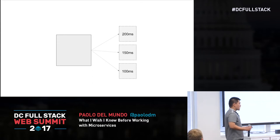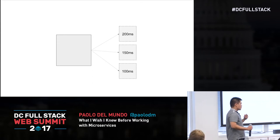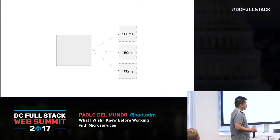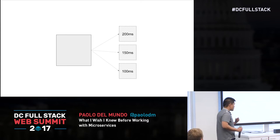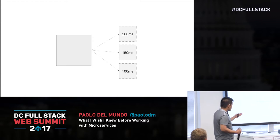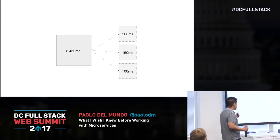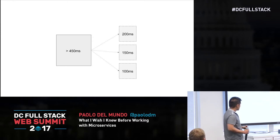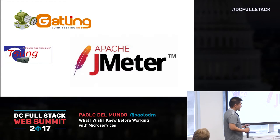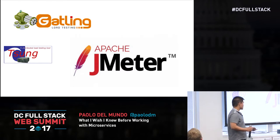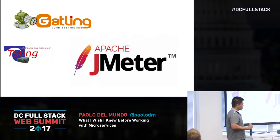So it's very important that every service publishes their numbers. For example, if I have three services and they all publish their numbers, I know that the time it would take to service a request would at least be that much. It's really important to use load testing tools — any one of these will do — but it's super important to use them and publish them so other people will know.